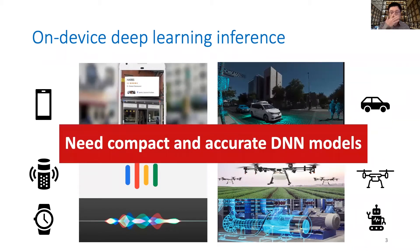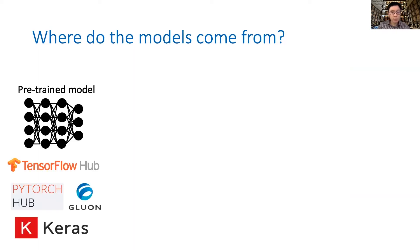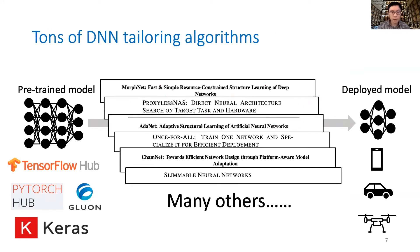A common requirement behind these use scenarios is compact and accurate deep neural network models. So where do the models come from? The typical practice is to start with an existing model from certain repositories, such as TensorFlow Hub, PyTorch Hub, and so on, and then tailor it to fit the environment of the specific deployment target. Hence, tons of model architecture tailoring algorithms have come up in recent years.